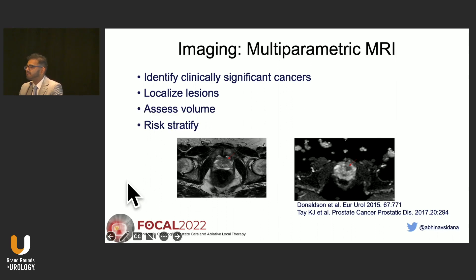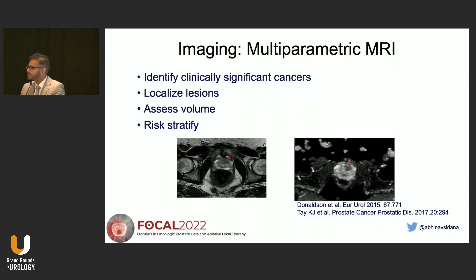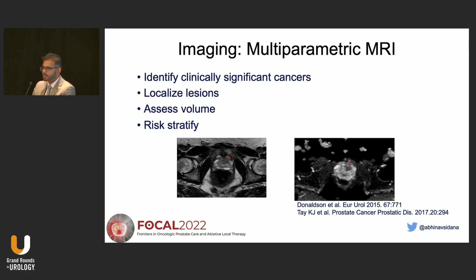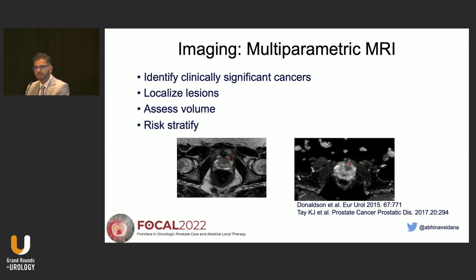MRI also helps risk-stratify these patients. If there's cancer outside the capsule or going into the seminal vesicles, those patients may not be good candidates for focal therapy. Getting a good quality MRI, as highlighted by Dr. Varma and Dr. Pinto, is essential for diagnosis of prostate cancer and for identifying patients for focal therapy.